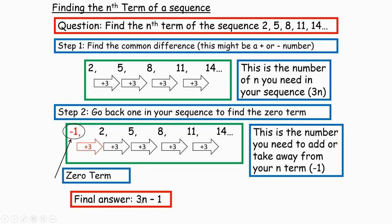If the zero term was 4, we'd put 3n plus 4 because it wouldn't be a negative number. Think about what 3n minus 1 means in words: three times a number, take away one. If it was 3n plus 4, it would be three times a number plus 4. Whichever term you're asked to find — usually the hundredth — you do three times 100 take away 1, giving 299. For the 20th term, three times 20 is 60, take away 1 gives 59.